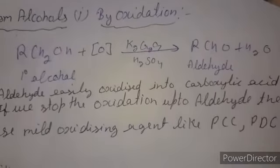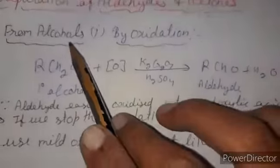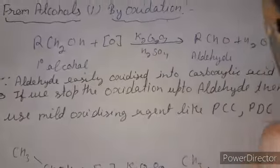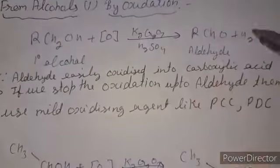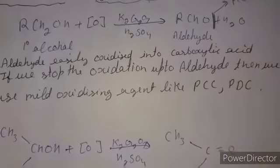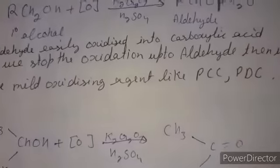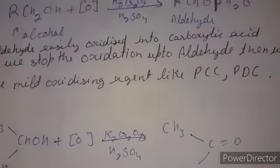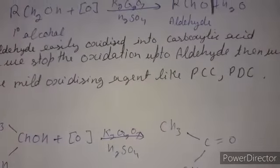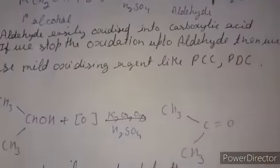Now we start the preparations of aldehydes and ketones. The first method is from alcohols by oxidation. When we oxidize a primary alcohol with a strong oxidizing agent it gives an aldehyde, but it further oxidizes to give carboxylic acid. To stop the reaction at the aldehyde stage, we use a mild oxidizing agent like PCC or PDC — pyridinium chlorochromate or pyridinium dichromate, known as Corey's reagent.